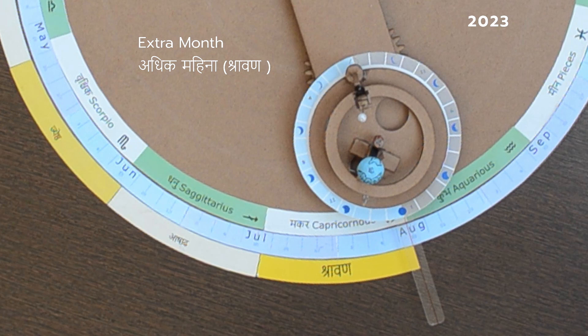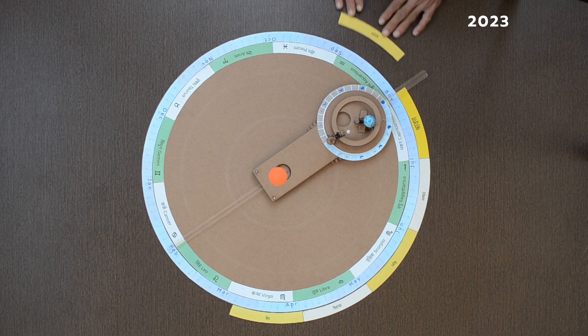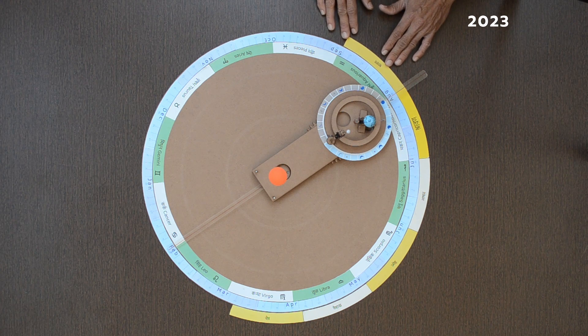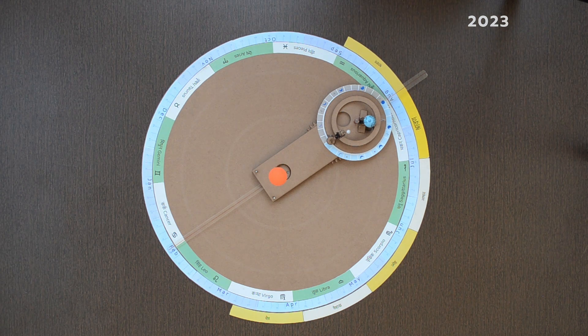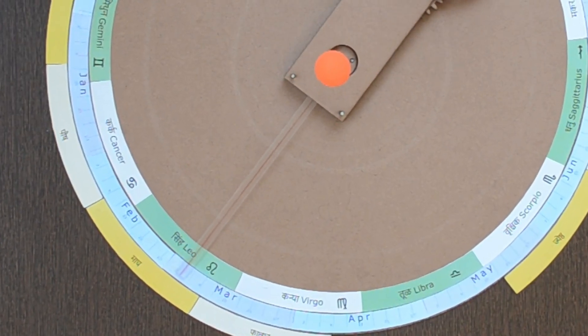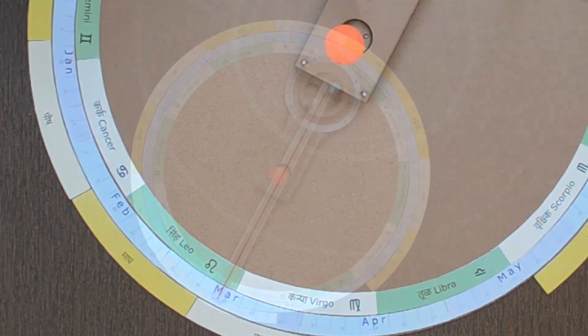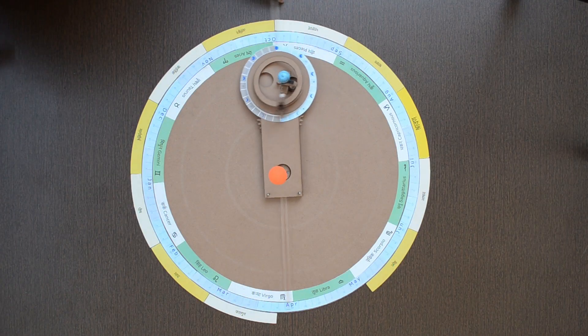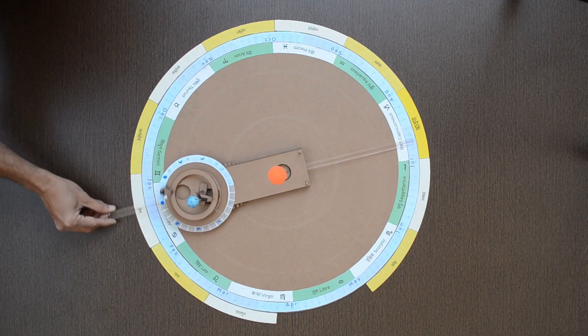Month after the same is considered as regular month, a normal Shravan as per the earlier sequence. Now Sun has transitioned to Simha Rashi from Karka Rashi. Other months follow the sequence as usual.